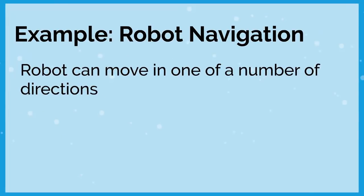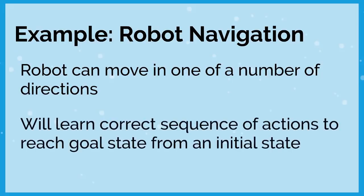Another example of reinforcement learning is robot navigation. A robot can move in any number of directions, and each individual move isn't as important as meeting the final goal. It learns the correct sequence of actions to reach the goal state from the initial state. We want to optimize the route — we don't want a self-driving car bouncing off the rails as it drives down the street. We want to get there efficiently and safely, optimizing that route while making it to the goal state.